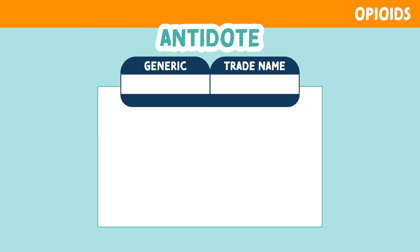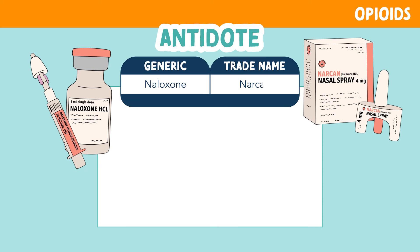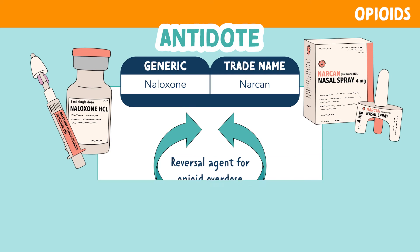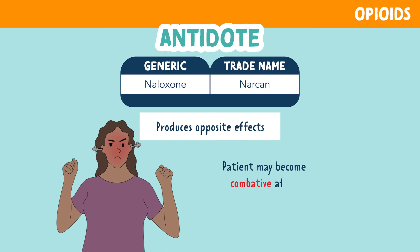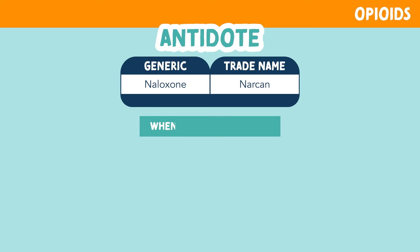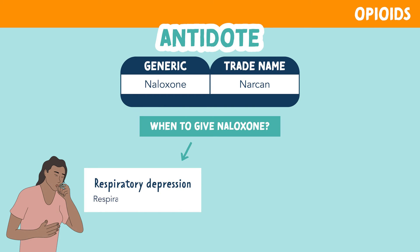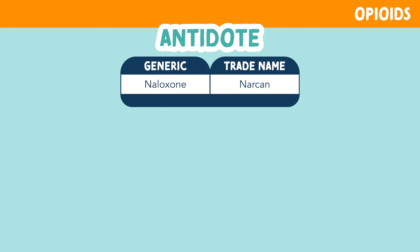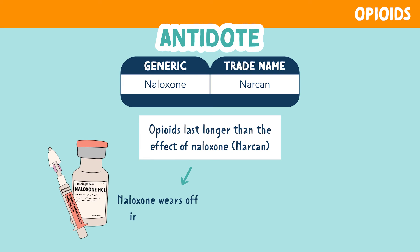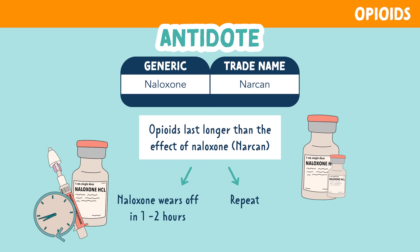Let's look at the antidote for opioids. Naloxone, trade name Narcan, is the antidote and reversal agent for opioid overdose. When given, it produces the opposite effect of opioids, so note that the patient may be combative after administration. We should give naloxone when the patient is experiencing respiratory depression or a respiratory rate of less than 12 breaths per minute, or if the client is unarousable. Nursing consideration: opioids last longer than the effect of naloxone, which wears off in one to two hours, so repeat doses may be needed.